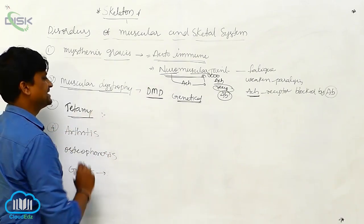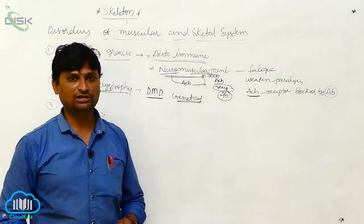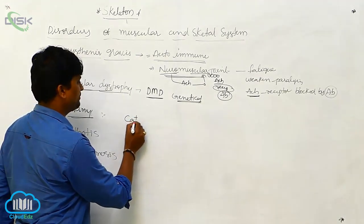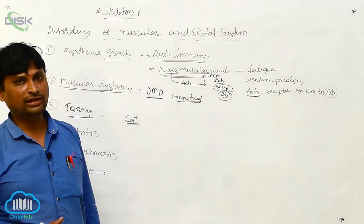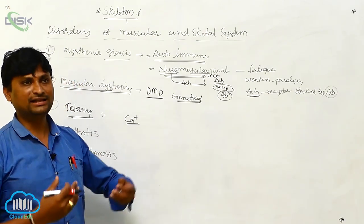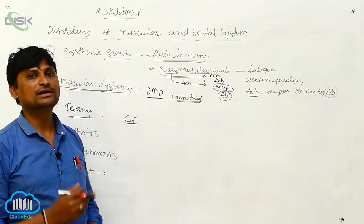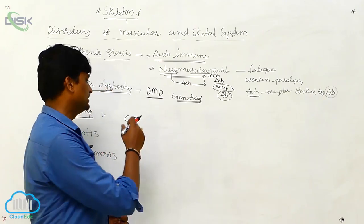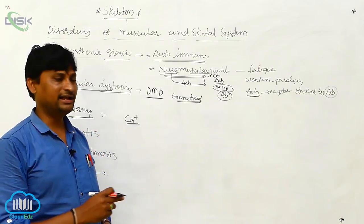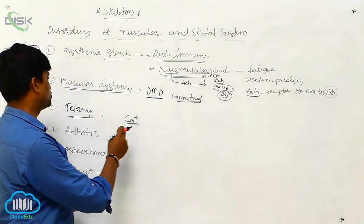The next disorder is tetany, where the muscle is locked in a particular position. It involves low availability of calcium ions — hypocalcemia — causing the muscle to not show any type of movement, resulting in a spastic stage. Parathyroid hormone (parathormone) is also involved in this type of abnormality, and hypoparathyroidism can contribute to the tetany condition.